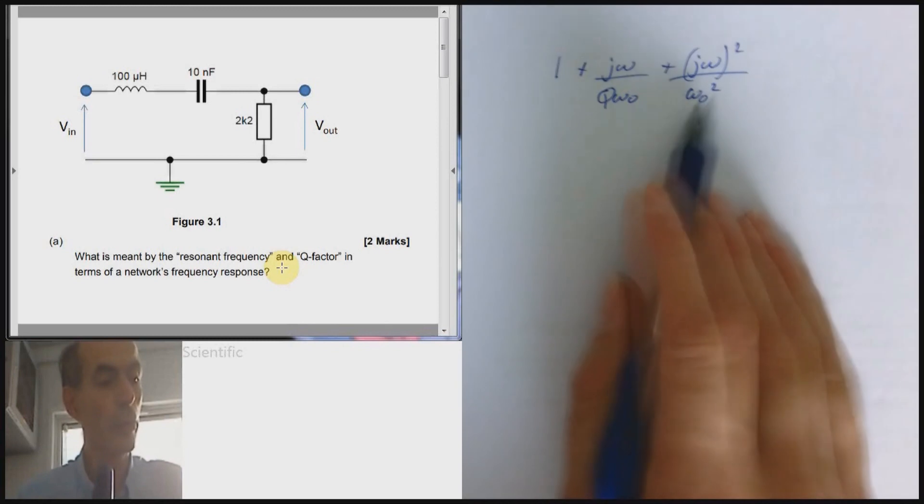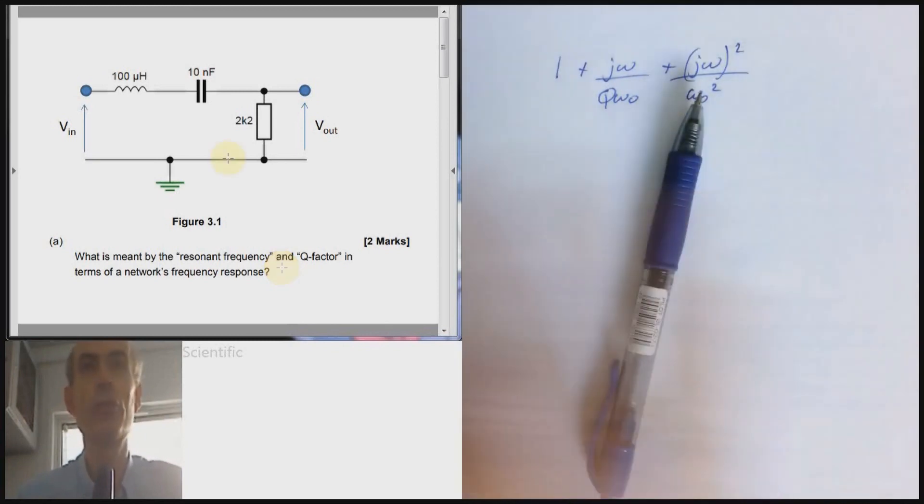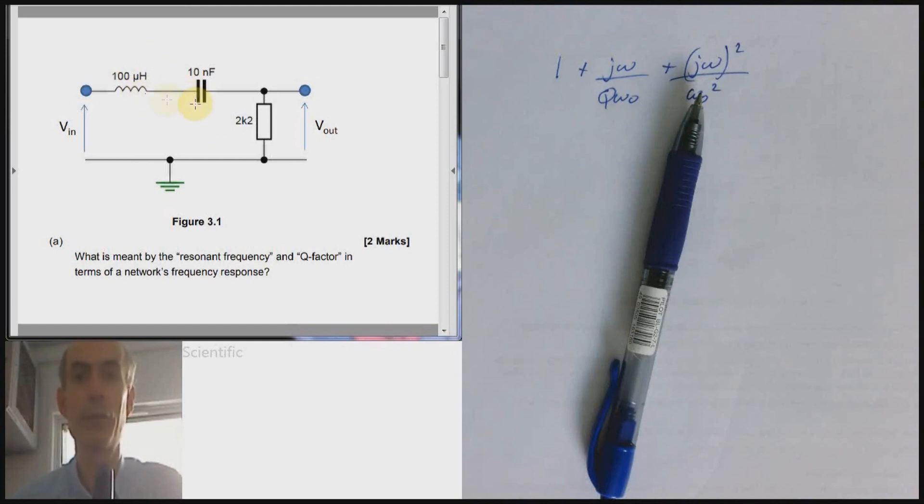You could also point out that the resonant frequency is the frequency at which the impedance of the inductor and the impedance of the capacitor cancel each other out. One is positive imaginary, the other is negative imaginary. At this particular frequency they have a net zero effect. That would be a reasonable definition of resonant frequency as well.